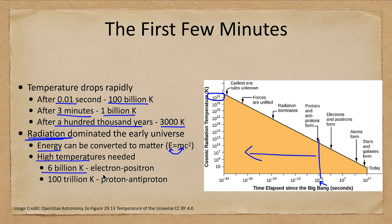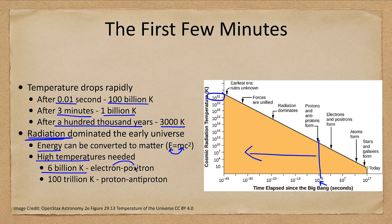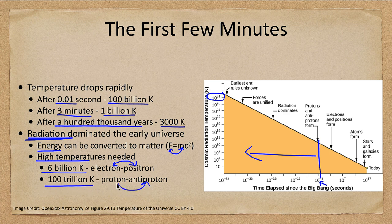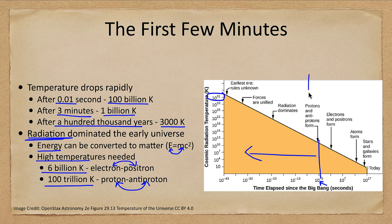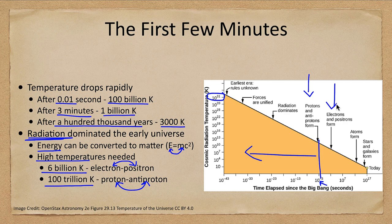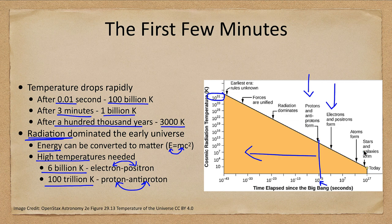Six billion Kelvin will create an electron and a positron pair—an electron and an anti-electron. You need even higher temperatures of 100 trillion to create the much more massive proton and anti-proton pair. They were able to form at one stage here—protons and anti-protons formed, electrons and positrons a little bit later, but still at very high temperatures in that very earliest fraction of an instant of the universe.